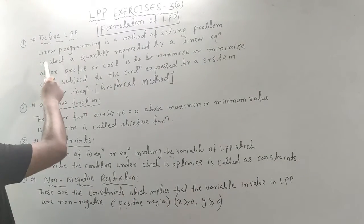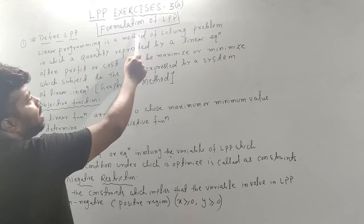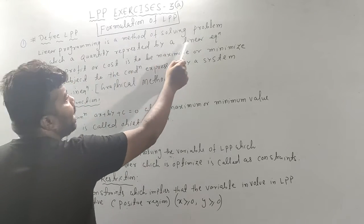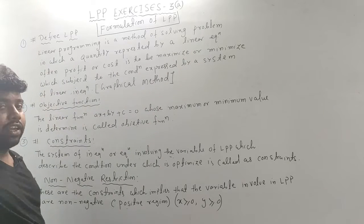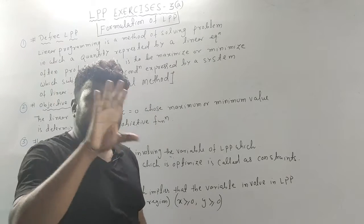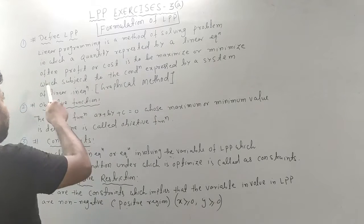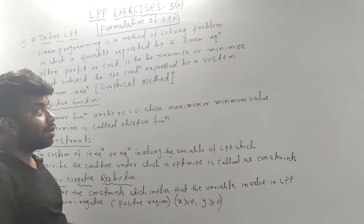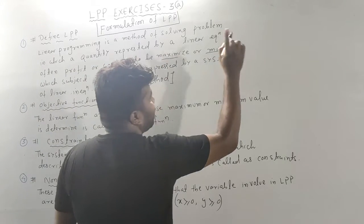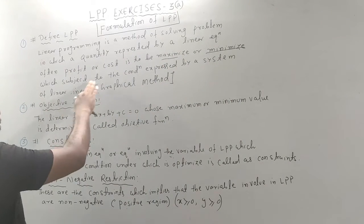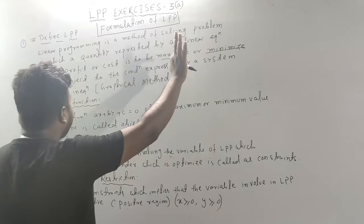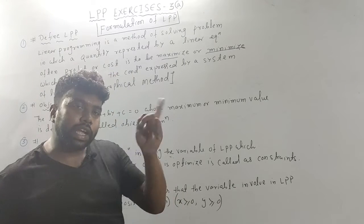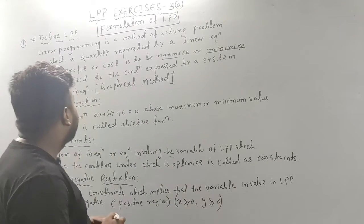Linear Programming is a method of solving a problem where each quantity is represented by a linear equation. In a linear equation, we can maximize or minimize — for example, profit or cost — subject to conditions expressed by a system of linear equations or inequations.